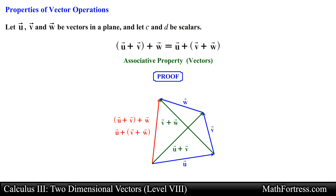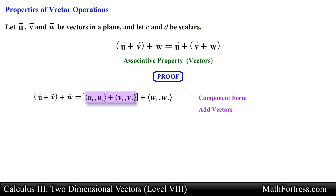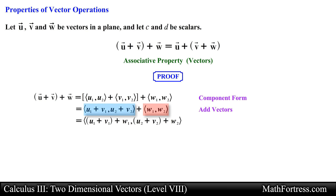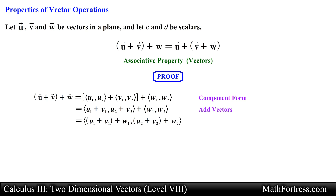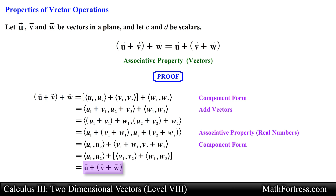Alternatively we can prove it algebraically. We break apart each vector into its component form, then add vector u and vector v component wise to yield a resulting vector. Next we add the two vectors component wise. The next step requires us to use the associative property of real numbers to group the real numbers in a different order. Then it is just a matter of working backwards and rewriting the expressions until we match the target vector expression.